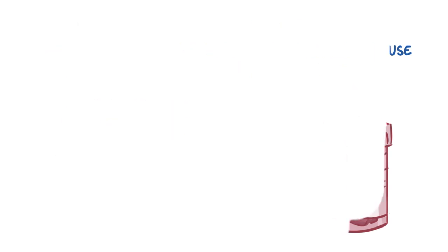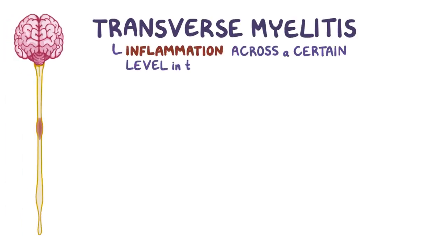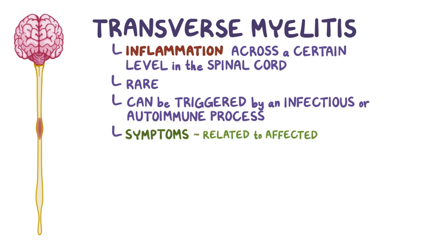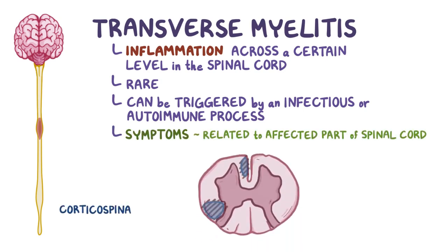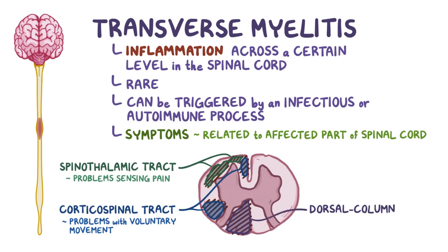As a quick recap: transverse myelitis is inflammation across a certain level in the spinal cord. It's a rare disease which can be triggered by an infectious or autoimmune process. The symptoms are related to the affected part of the spinal cord. When the corticospinal tract is affected, a person will have problems with voluntary movement; when the spinothalamic tract is damaged, a person will have problems sensing pain; and if the dorsal column pathway is damaged, a person will have problems with balance and spatial orientation.